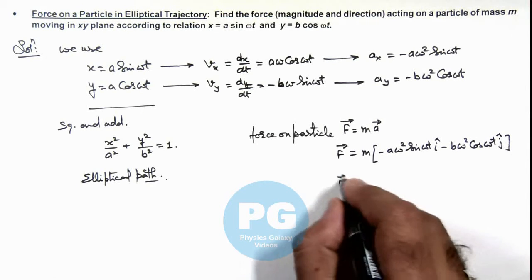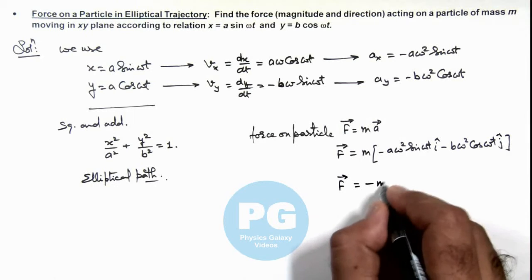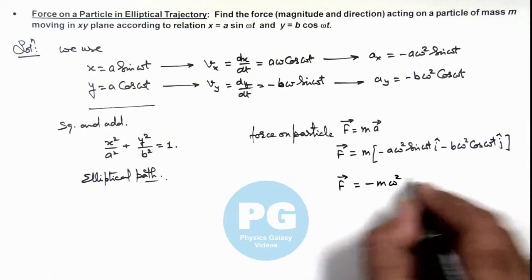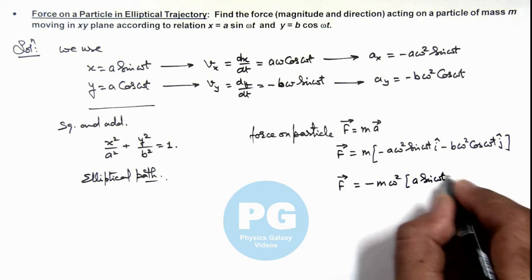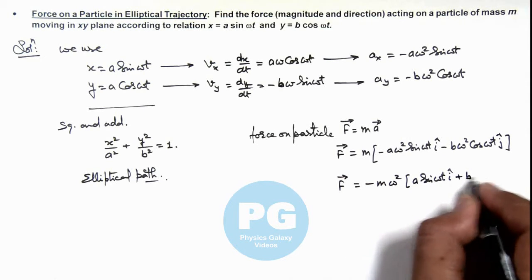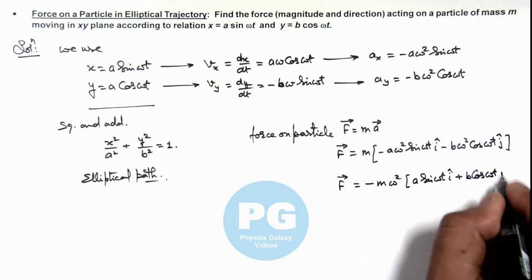Or this can also be written as minus m omega square, and this is a sine omega t i cap plus b cosine omega t j cap.